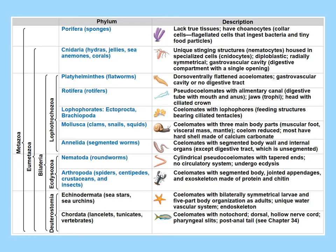This covers the protostomes section. Note that Echinodermata appears at the end of this chapter but will be addressed in the deuterostomes chapter (chapter 34) and should be included in your study for that chapter.